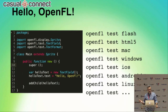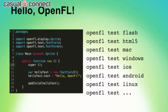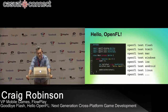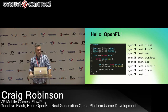Building for different platforms is as easy as typing 'openfl test' and then the platform name. For instance, 'openfl test flash' will build a SWF and run it in the local Flash player. 'openfl test html5' will build an HTML5 game and run it in your local browser. 'openfl test mac' or 'openfl test windows' will build a native desktop application. And 'openfl test ios' or 'openfl test android' will build a native mobile app and install it on a device attached via USB. Once it's set up, building for all platforms is easy.